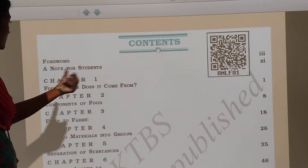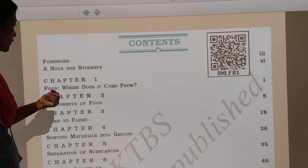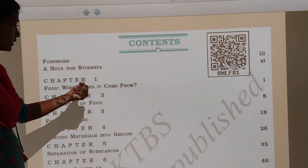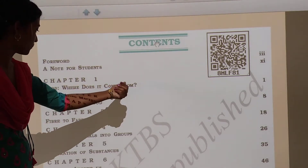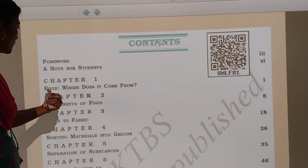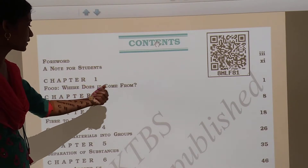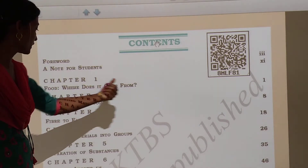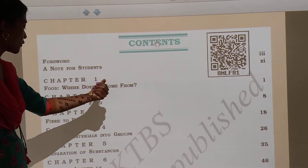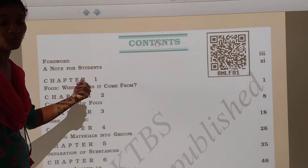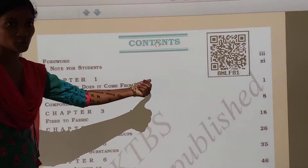Contents: Chapter number 1 — Food, where does it come from? In this chapter we study about the food materials and sources.